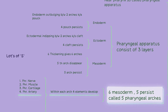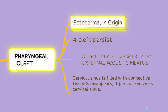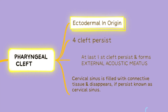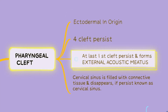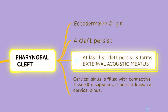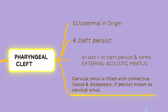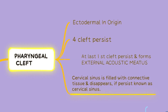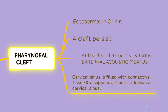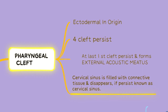As we have covered earlier, pharyngeal clefts are ectodermal in origin. Four clefts persist and in the end, only the first cleft persists and forms the external acoustic meatus. The cervical sinus is filled with connective tissue and disappears. If it persists, it is known as the cervical sinus.